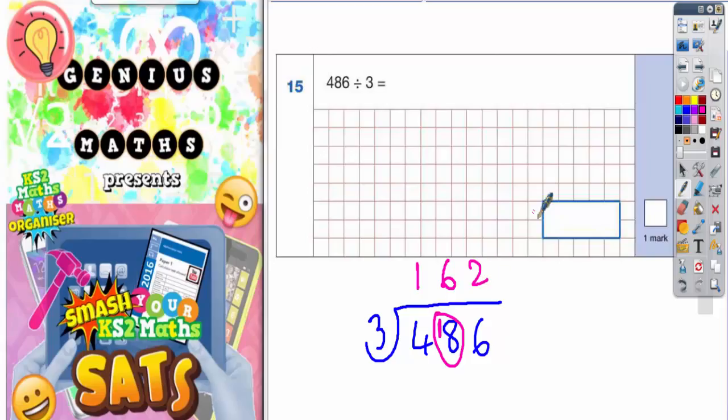So your final answer is 162. Quick recap: threes into 4 goes 1 remainder 1, threes into 18 goes 6 times, and threes into 6 goes twice, 162.